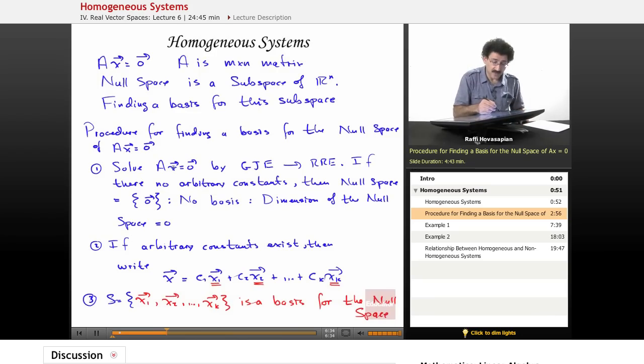So again, what we do when we want to find the basis of the null space of a homogeneous system, we solve the homogeneous system with reduced row echelon form. We check to see if there are no columns that don't have a leading entry, meaning if all the columns have a leading entry, there are no arbitrary constants. Our null space is the zero vector, it has no basis,